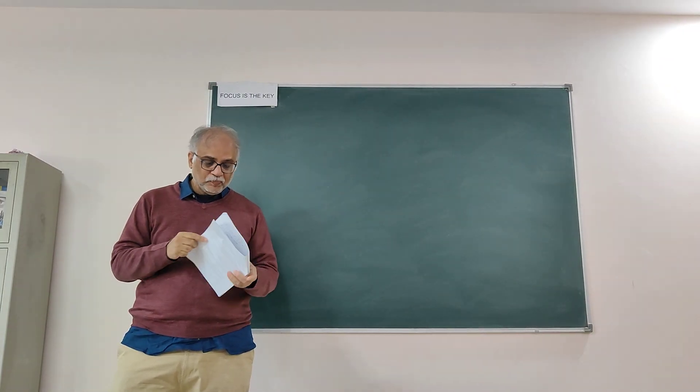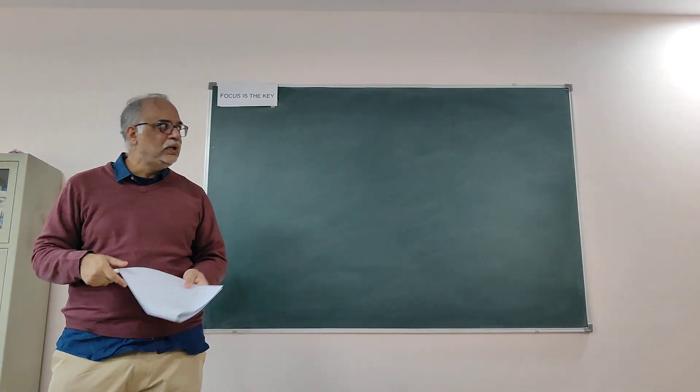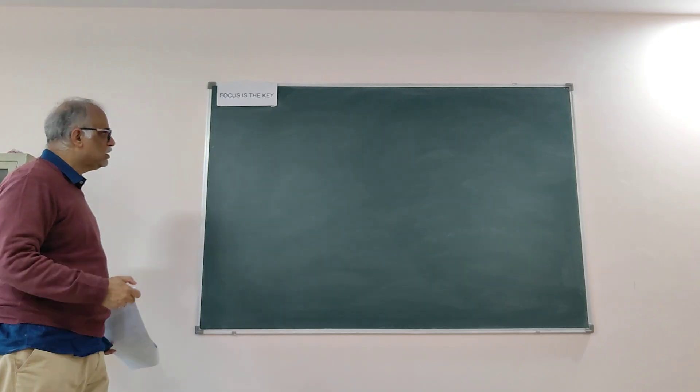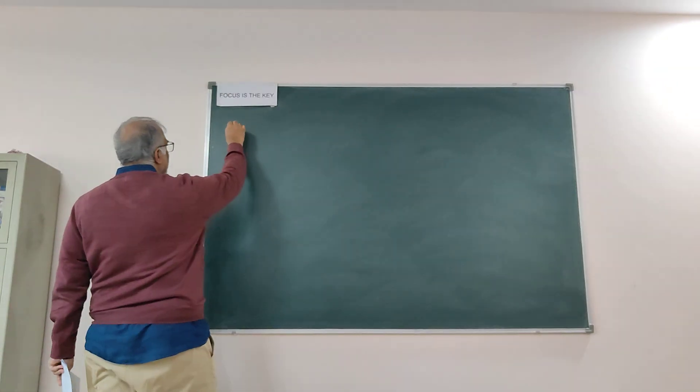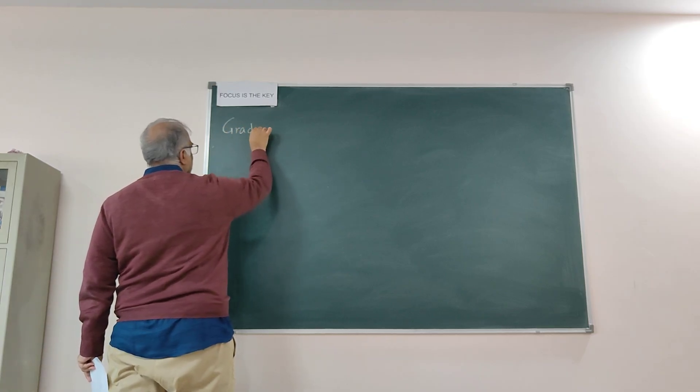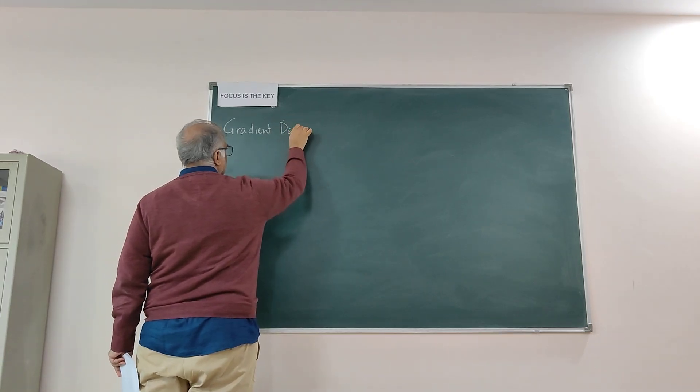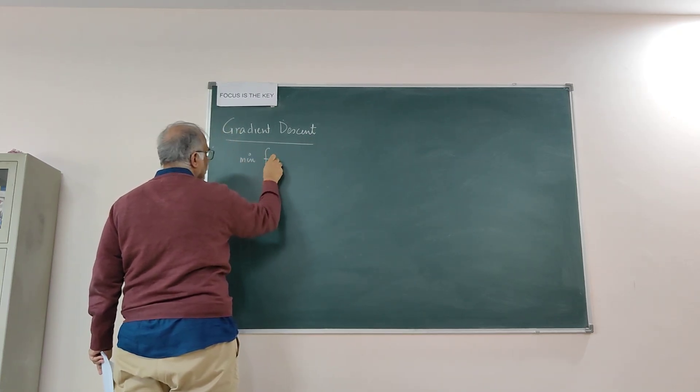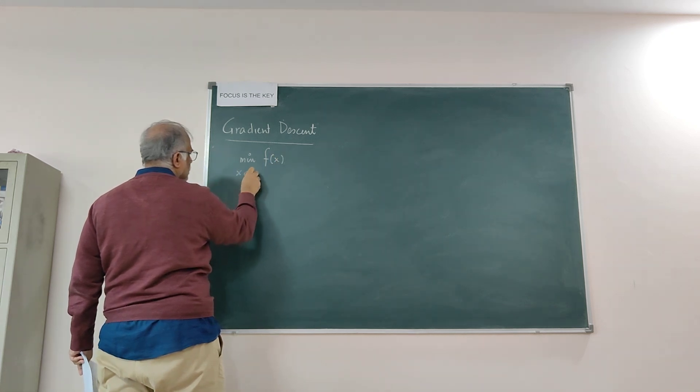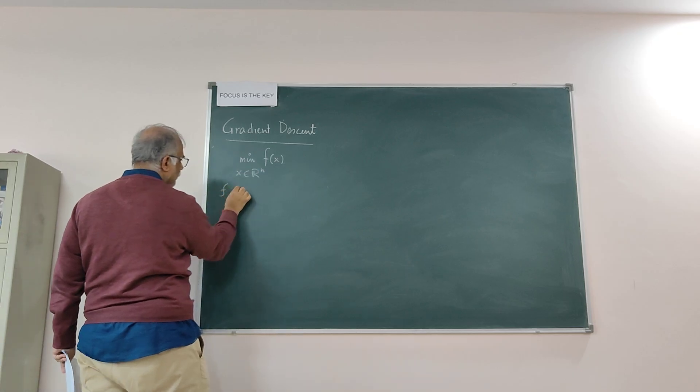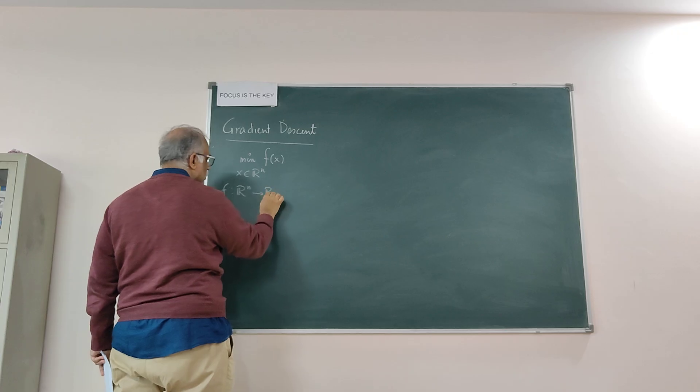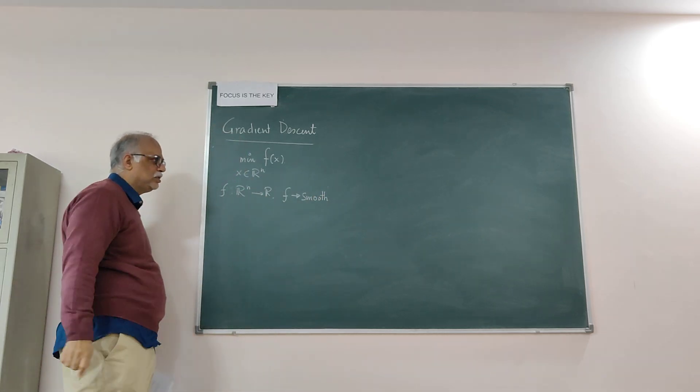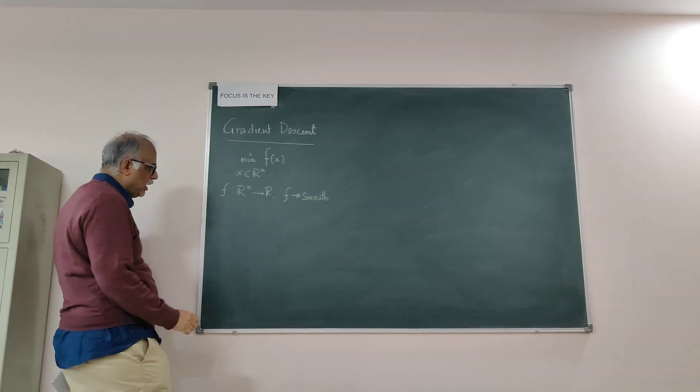Let me first discuss why we need stochastic gradient descent, because in machine learning it is very popular and very common. So let us first talk about gradient descent for a moment. In gradient descent, you are minimizing the function f(x) where x is running over all of R^n, and f is a function from R^n to R. In our setting, we will consider the function f to be smooth, meaning it is not only differentiable but its gradient is also continuous as a function of x.